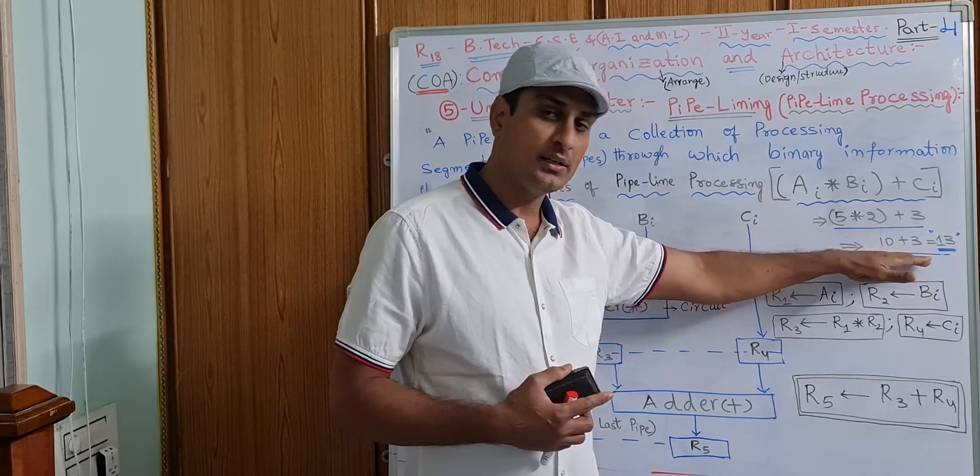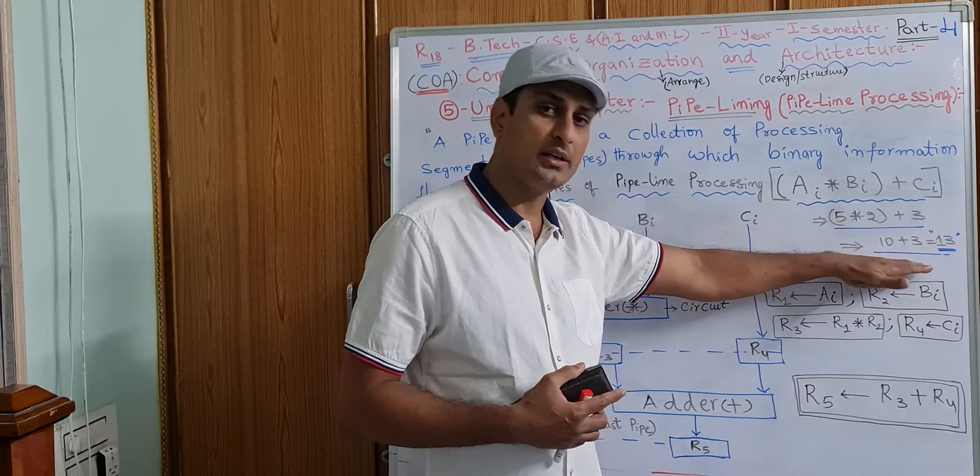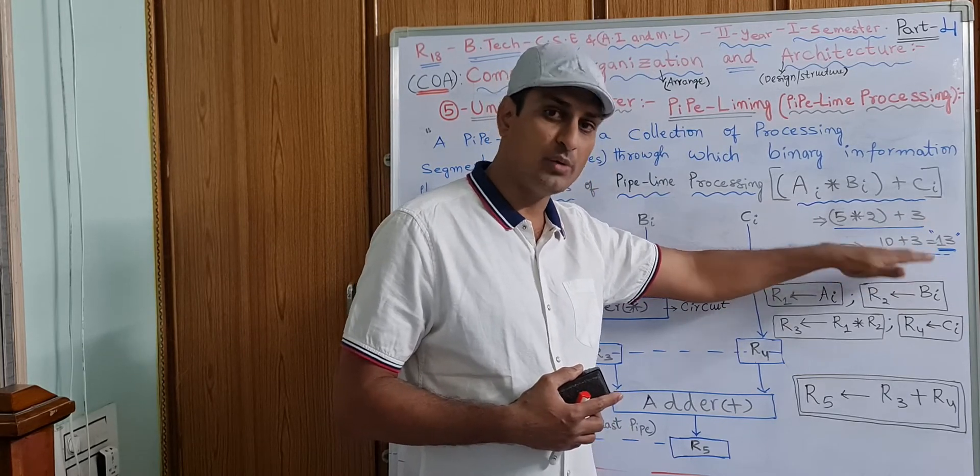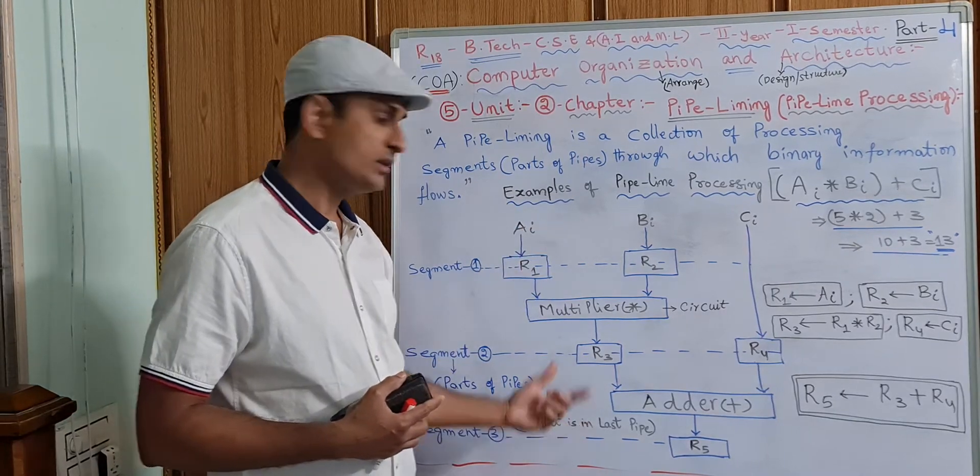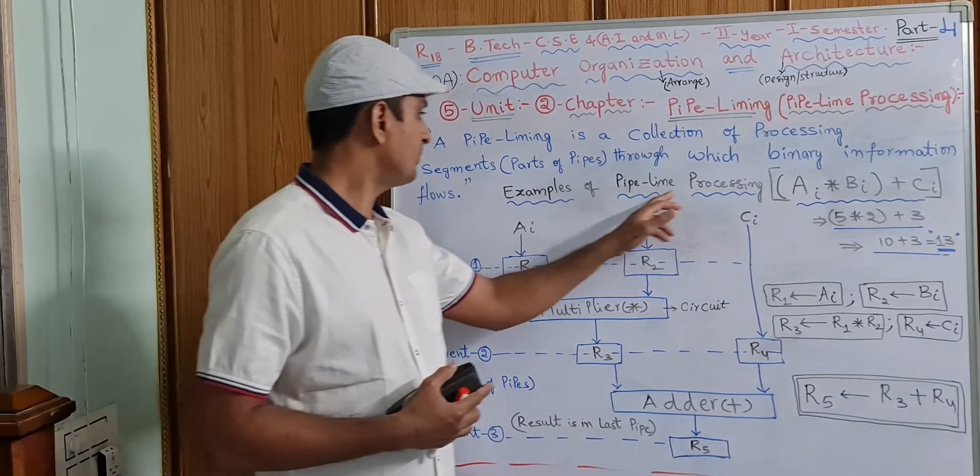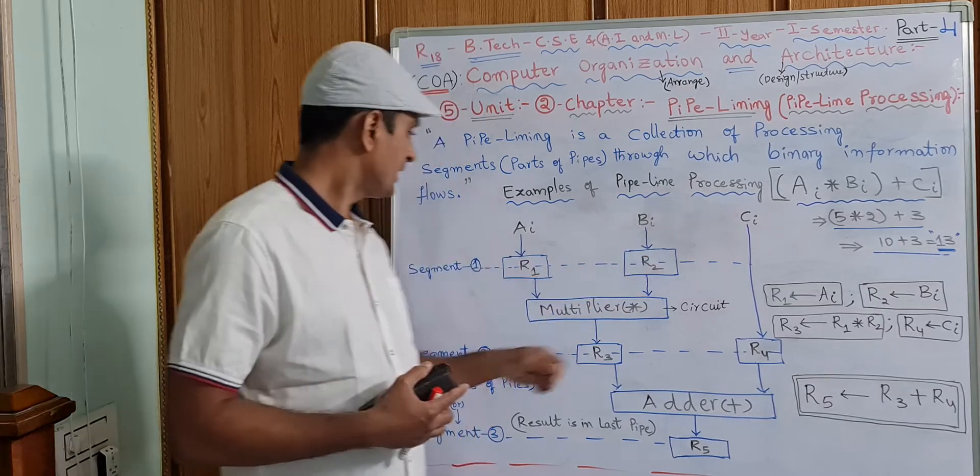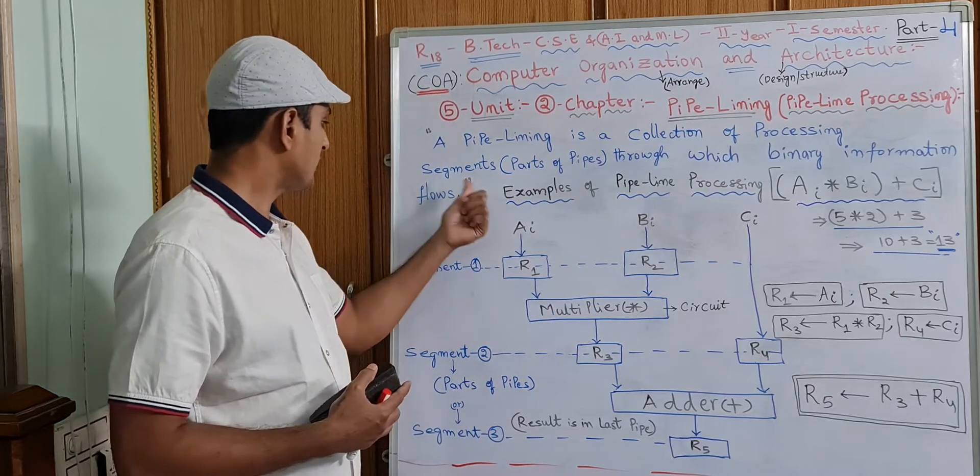If you are doing this calculation in a computer through the keyboard, it will be done like this. For example, this is an example of pipeline processing. In the first segment, part of the pipe,